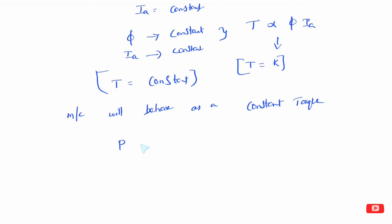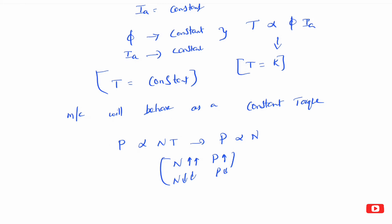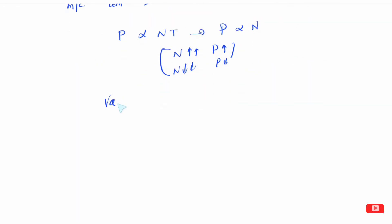Power is equal to 2π NT by 60, so power is proportional to N times T. Since torque is constant, power is proportional to N (speed). So as speed changes, power changes. This is a constant torque, variable power drive — known as a constant torque drive.